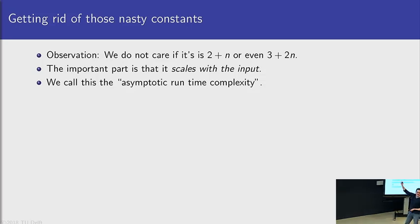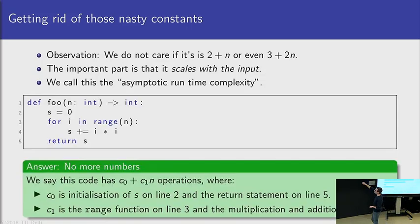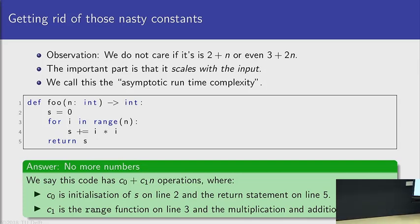So if we take a look—sure, it has a fancy name: asymptotic runtime complexity. We'll talk more about that in a moment. But if we take a look at this piece of code, 's equals zero' and 'return s' take the same amount of time whether n equals zero, a thousand, or a million. It doesn't matter. They take some constant amount of time.